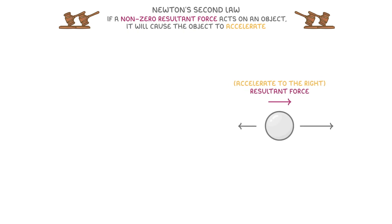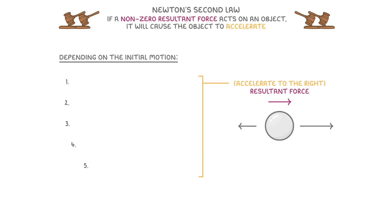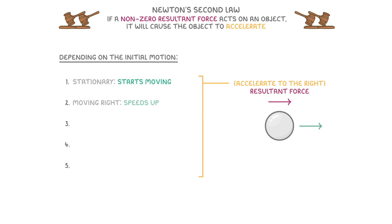The confusing bit here is that depending on the initial motion of the particle, this acceleration to the right could result in five different things happening. For example, if the object started off stationary, then the acceleration would cause it to start moving to the right. And if the object was already moving to the right, then it would cause it to speed up.